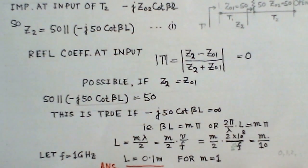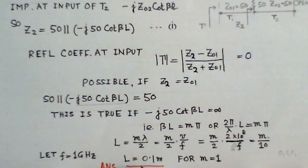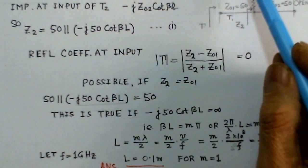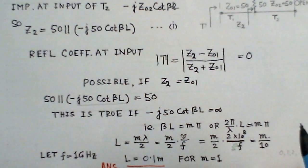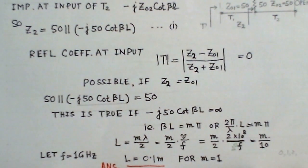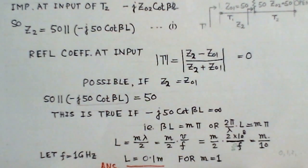If we take 2 GHz, the length comes out to be 0.2 meters, and so on. The multiples of these lengths give the same effect because the properties of transmission lines repeat at multiples of the half-wavelength. Since we have taken the frequency to be 1 GHz, the unknown line length comes out to be 0.1 meters. This is the answer to this problem.